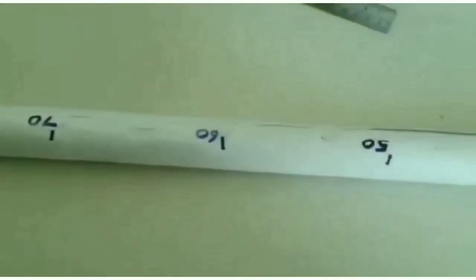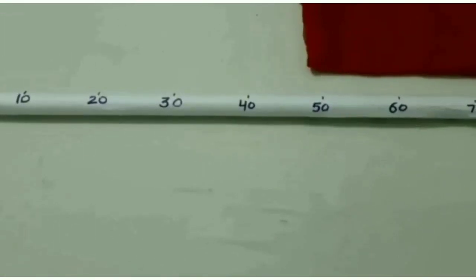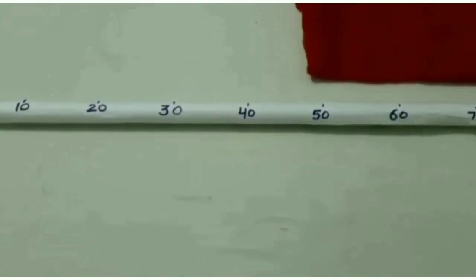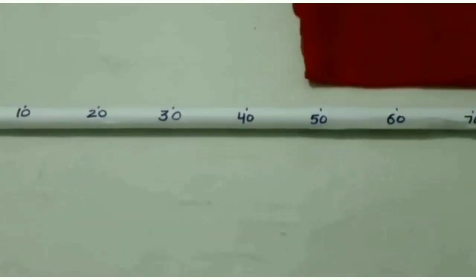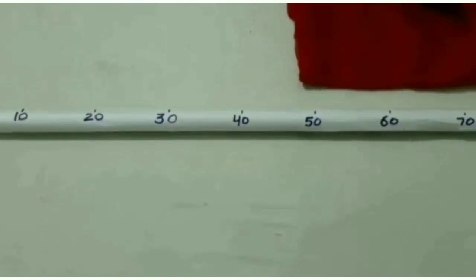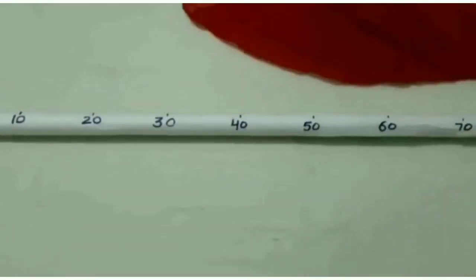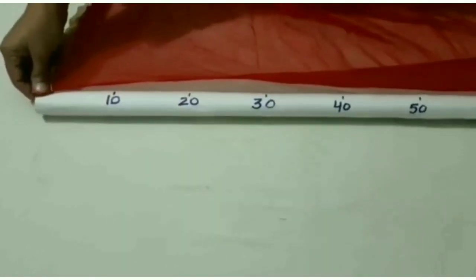So dear students, now let us find out the length of this cloth with the help of this meter rod. We will start from the starting point and notice the other end of the cloth. Yes, it's hundred centimeters means one meter.